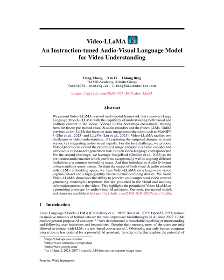Training the audio-language branch poses unique challenges due to the rarity of audio-text data. The main goal is to align the output from the frozen audio encoder with the embedding space of the LLM using learnable parameters in the audio-language branch. Given the shortage of audio-text data, we leverage ImageBind as our audio encoder. ImageBind can align embeddings from different types of data, or modalities, into one unified space, which has shown to be highly effective for cross-modal retrieval and generation tasks. While there's a shortage of audio-text data, there's a surplus of visual-text data.